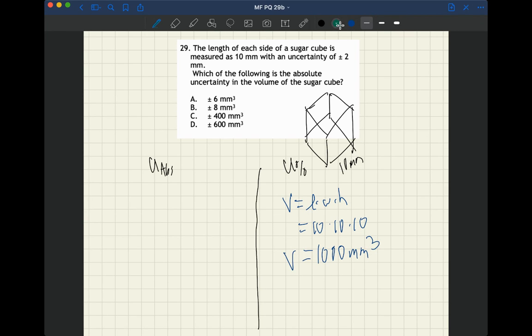If we're going about this through the percent uncertainty, the U percent is the absolute uncertainty over the mean times 100. And so in this case, one particular side has an absolute uncertainty of two. The whole thing is 10 times 100 and so that's 20 percent.